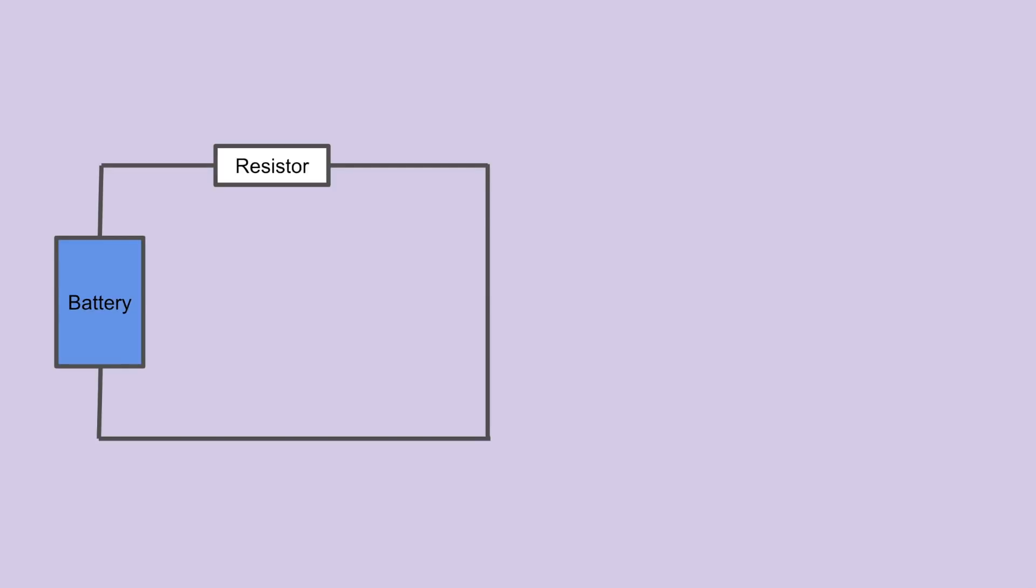So you've recently taken an intro electromagnetism or analog circuitry course, and you've become familiar with circuits that look like this, with some voltage source and some resistor.